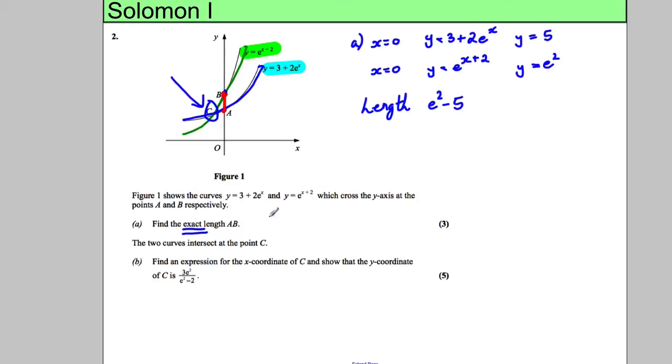Now the two curves intersect at point C. Find an expression for the x-coordinate of C and show that the y-coordinate is as follows. Okay, so we've got to solve these two equations together so we're trying to solve the equations y = 3 + 2e^x and y = e^(x+2).